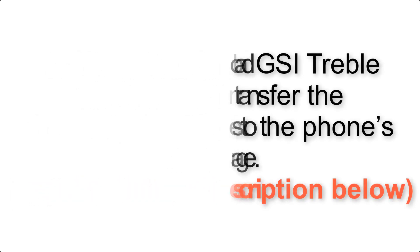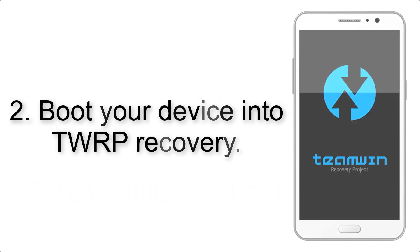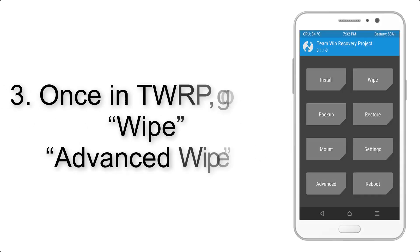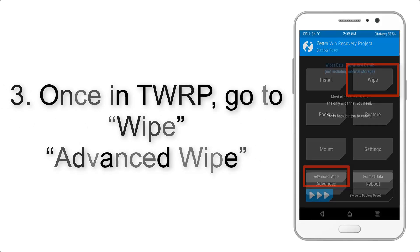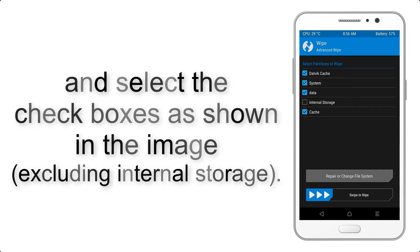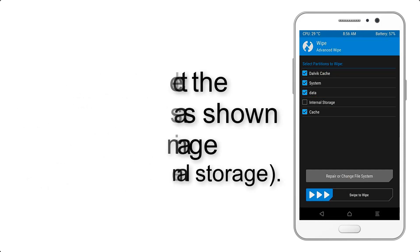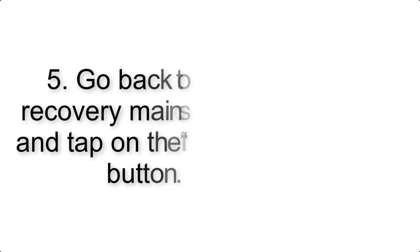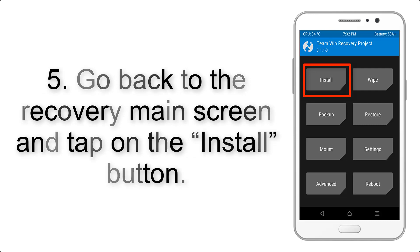Step 2: Boot your device into TWRP recovery. Once in TWRP, click on Wipe, then Advanced Wipe, and select the checkboxes as shown in the image, excluding internal storage. Step 4: Swipe the button to wipe the device.